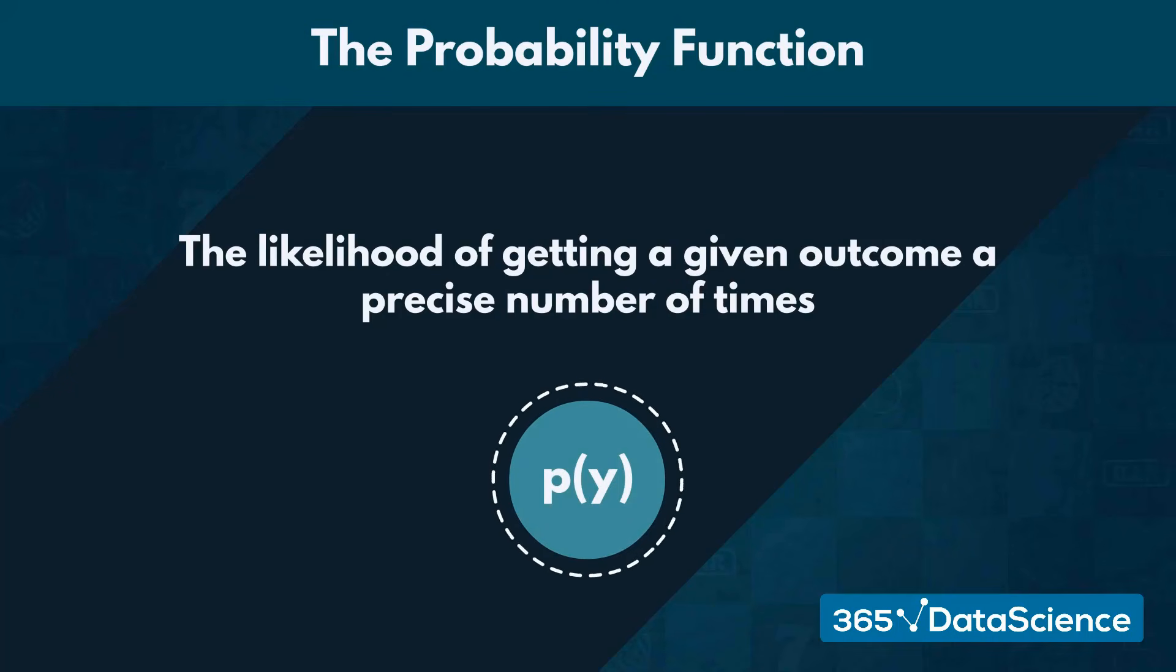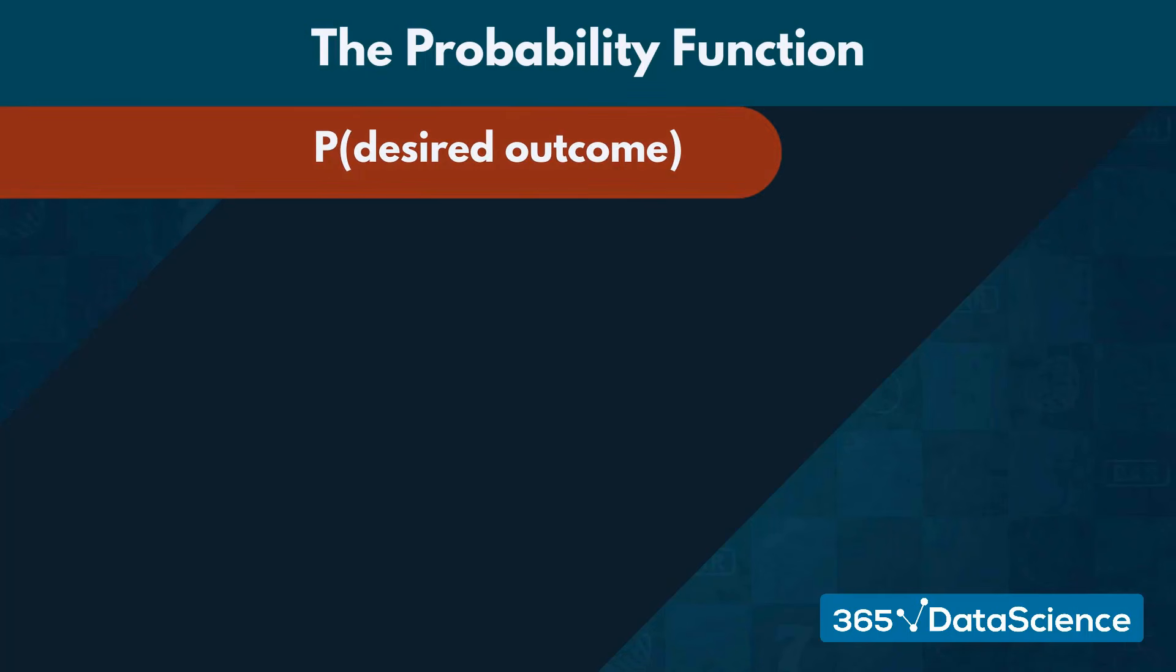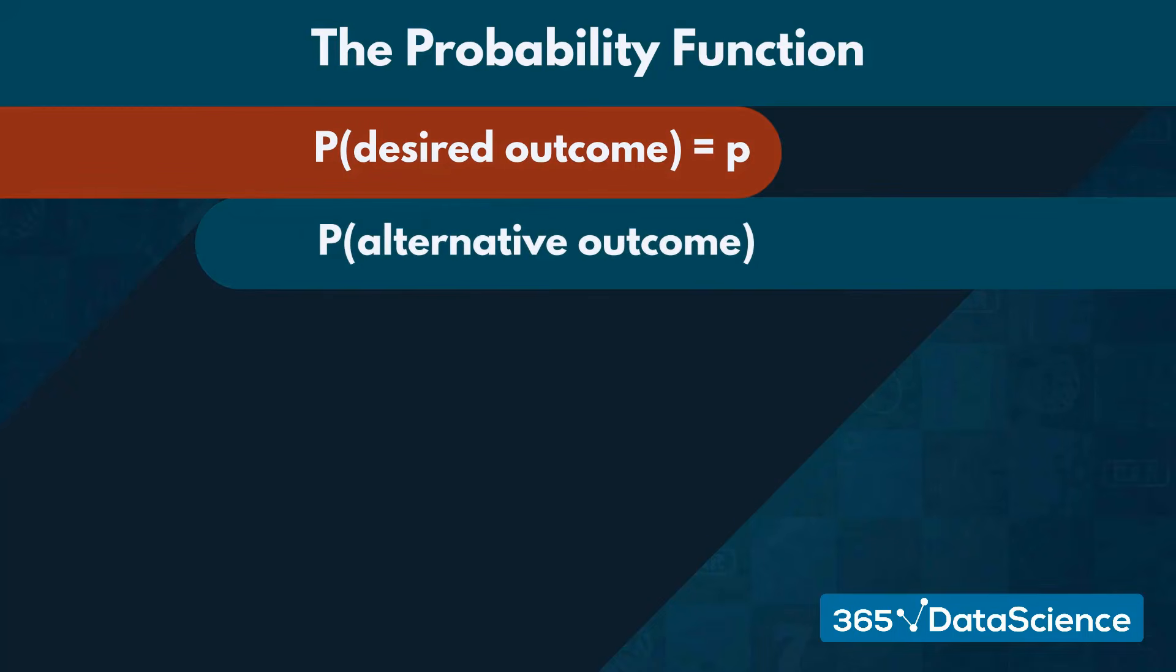For starters, each individual trial is a Bernoulli trial, so we express the probability of getting our desired outcome as P and the likelihood of the other one as 1 minus P.